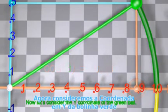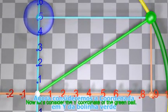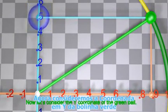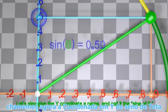Now let's consider the y-coordinate of the green ball. Let's also give the y-coordinate a name and call it the sine of θ.